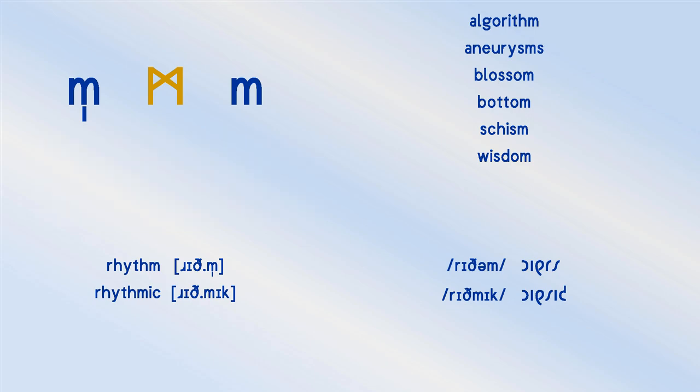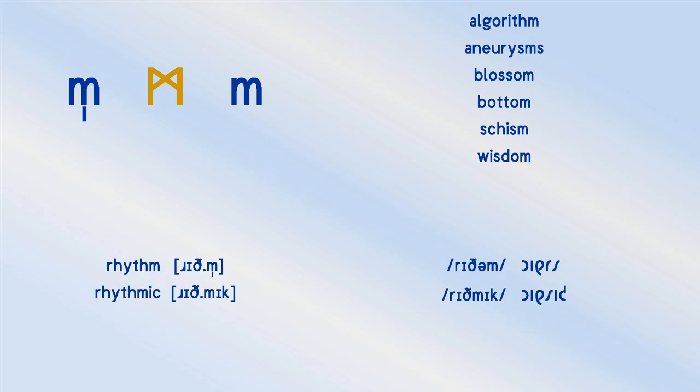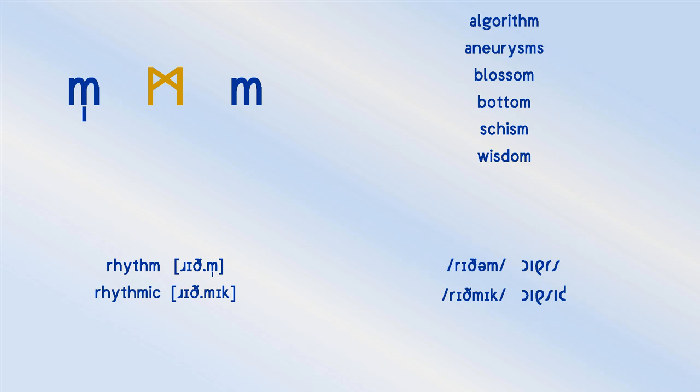In the lower left, you can see the words rhythm and rhythmic with their IPA transcriptions. In the lower right, you can see how those words are spelt in the Shavian script, along with the IPA transcription of the Shavian text. Now you might wonder why we are including Shavian in a video about runes. Apart from the great support that the Shavian community has been to us, it's because the Shavian community has explicitly rejected syllabic consonants. As you can see in the word rhythm, they write their symbol equivalent to the schwa before a syllabic consonant to indicate that that consonant is syllabic.